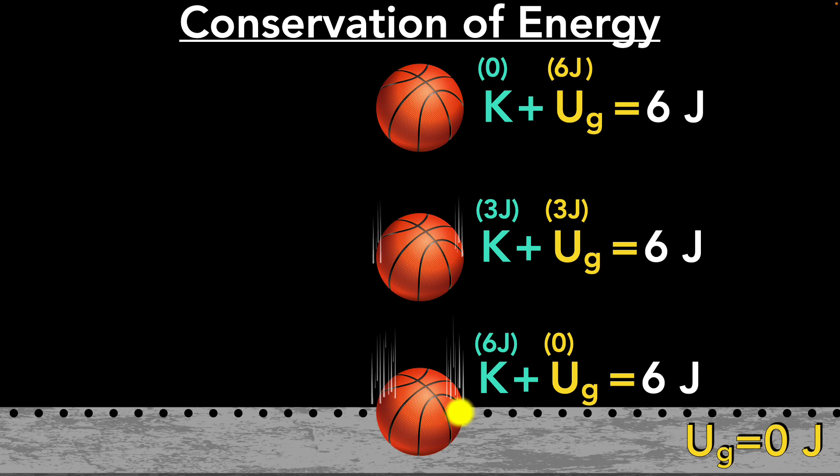But what happens when the ball hits the ground and bounces back up? Let's look at that. At the moment of impact, the ball compresses and then rebounds. And again, no energy is entering or leaving the system. So now everything starts reversing. Right after the bounce, all the energy is kinetic. Then as the ball rises, it starts slowing down.